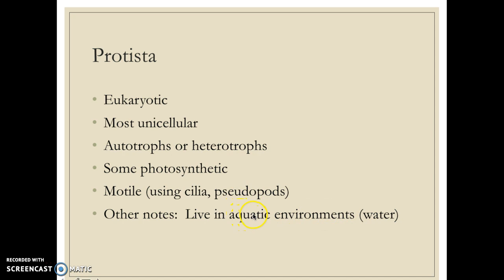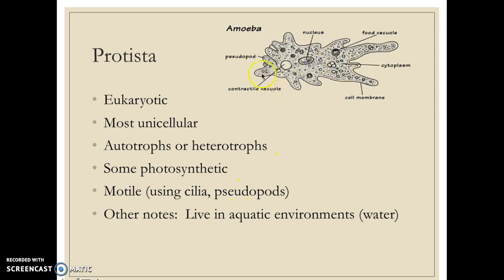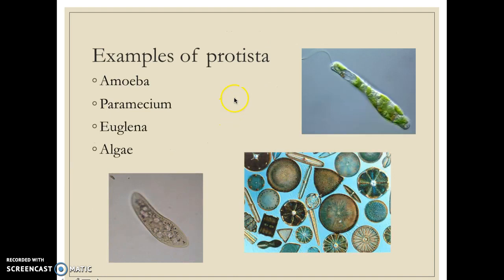Protists mostly live in aquatic environments like water. Examples include algae, amoebas, and paramecia. An amoeba is just one single cell, but inside that cell there's a lot of complexity — vacuoles, pseudopods, a nucleus, cytoplasm, cell membrane, ribosomes, and many different organelles. It's quite a large cell compared to bacteria. Algae, paramecia, and amoebas are all examples of kingdom protista.